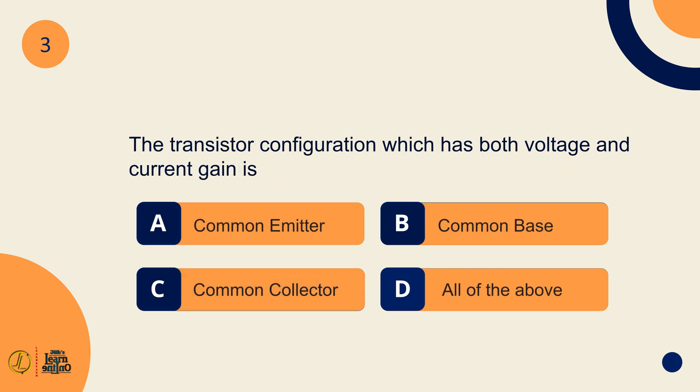The transistor configuration which has both voltage and current gain is common emitter.